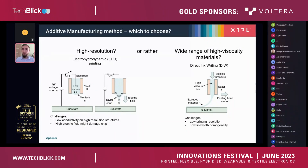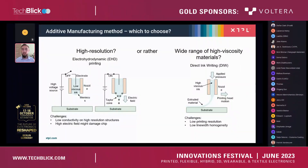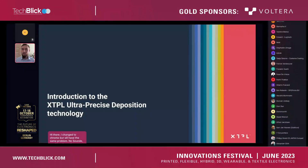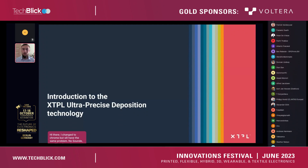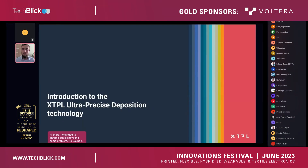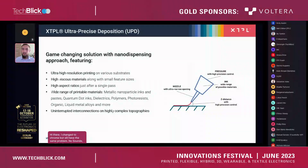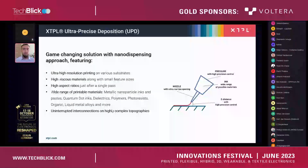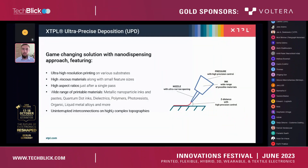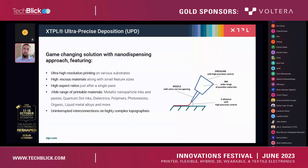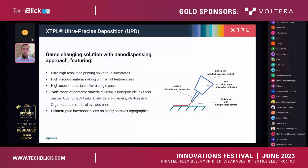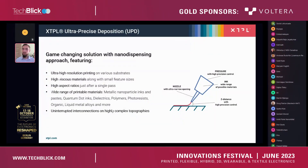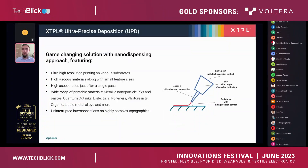But how about if you would like to have the benefits of both technologies — high resolution printing and using a wide range of materials? If yes, then I'm happy to introduce you to the XTPL Ultra Precise Deposition technology. The UPD technology is a new solution with a nano-dispensing approach. You can achieve ultra-high resolution structures on various substrates, even in sub-micron scale, using a wide range of viscosity materials, even up to one million centipoise. When combining these two features, the structures can have a high aspect ratio just after a single pass.